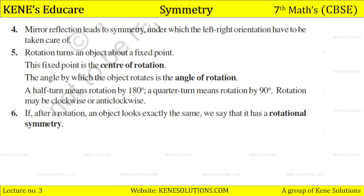Mirror reflection leads to symmetry, under which the left-right orientation has to be taken care of. Rotation turns an object about a fixed point — that fixed point is the center of rotation. The angle by which the object rotates is the angle of rotation. A half turn means rotation of 180 degrees, and a quarter turn means rotation of 90 degrees. Rotation may be clockwise or anticlockwise. If after a rotation the object looks exactly the same, we say it has rotational symmetry.